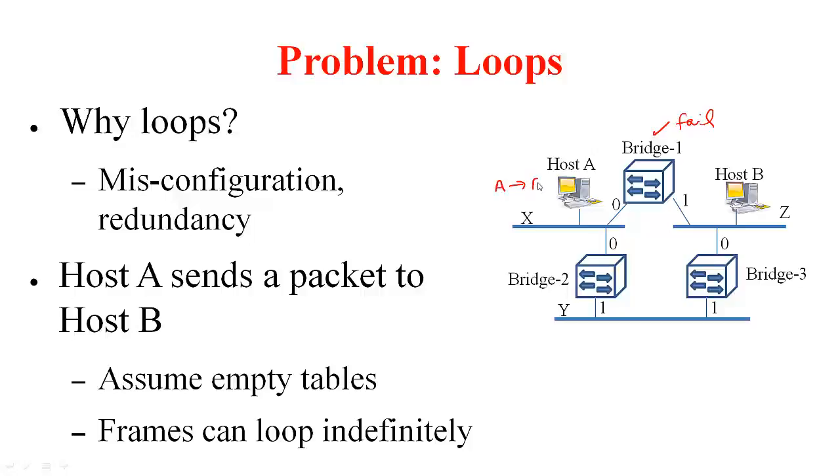Suppose host A sent a packet to host B. Now, assume that these bridges have empty tables. They do not know where host B is. So, this packet is received by bridge 1 as well as bridge 2. We will focus on bridge 1 first. So, it received here. So, it came on this port. So, it will send it out on the other port. So, now through this bridge 3 is going to receive the packet through this port 0. Again, it received on port 0. So, it is going to send it out here. And now, this packet is going to come to bridge 2 on port 1. It received on port 1. So, it is going to send it here. Now, again bridge 1 is receiving this packet on port 0. It does not know where B is. So, again it is going to send.